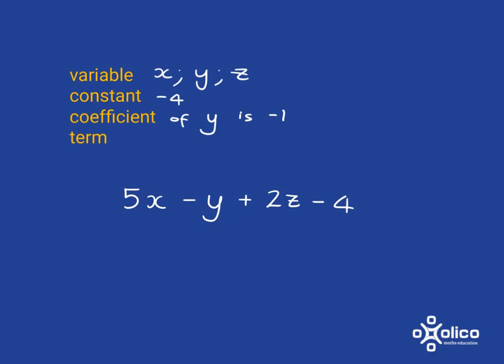And then terms in an algebraic expression are things that are separated by the addition and subtraction sign. So in this expression here, we've got 1 term, 2 terms, 3 terms, 4 terms. So in this case, we have got 4 terms.